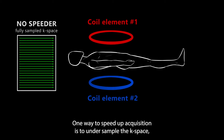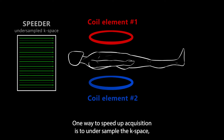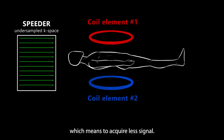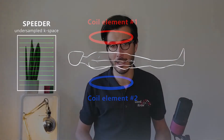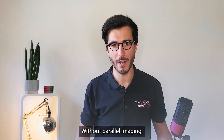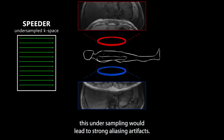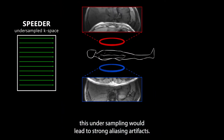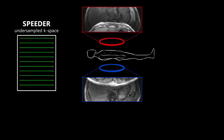One way to speed up the acquisition is to under-sample the k-space, which means to acquire less signal. Without parallel imaging, this under-sampling would lead to strong aliasing artifacts.